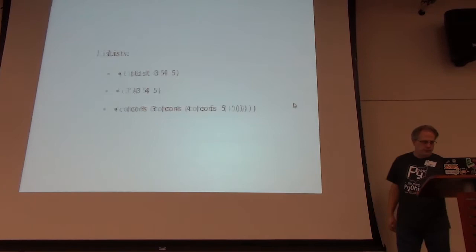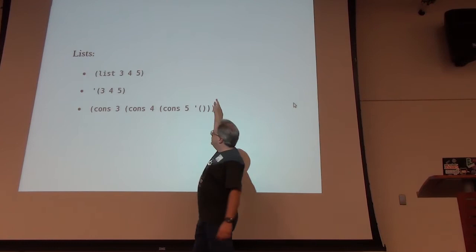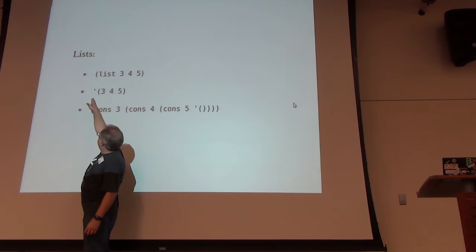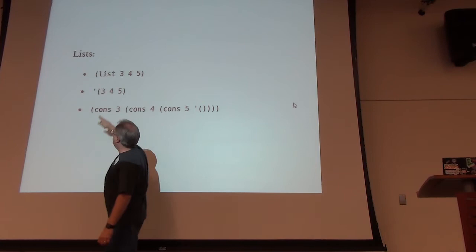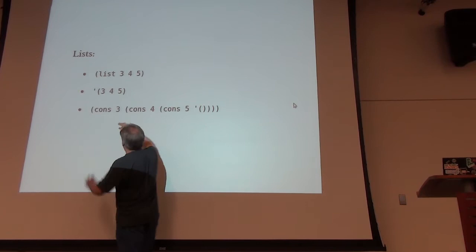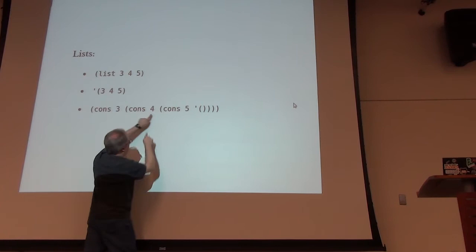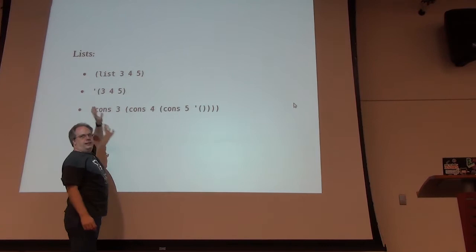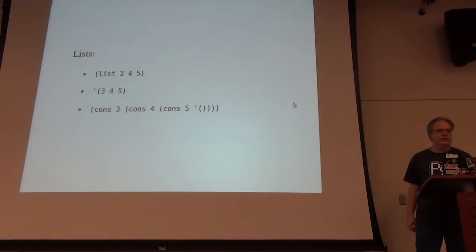You also have lists. These three examples all make the same type of list: the keyword 'list' with numbers 3, 4, and 5; a tick mark as shorthand for that; and the 'cons' function. What cons does is it takes a value and the next pair of values and combines them all together. You don't need to know all the cons details — that's just three ways to make a particular list.